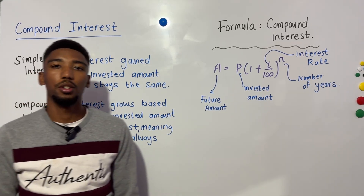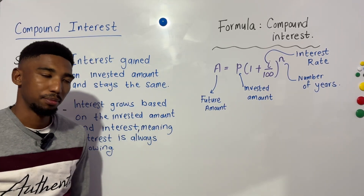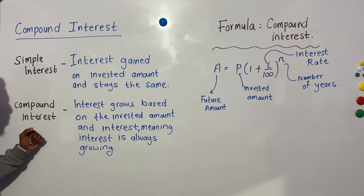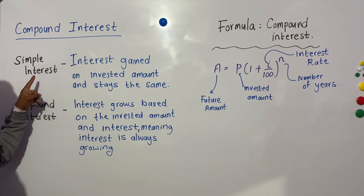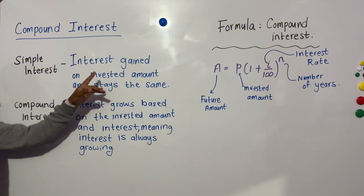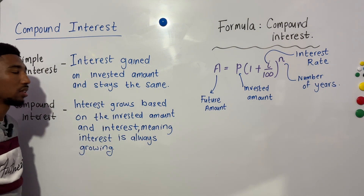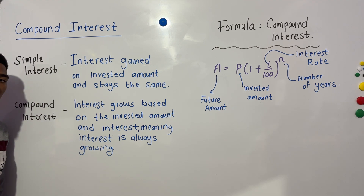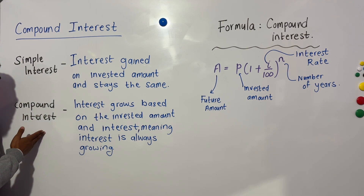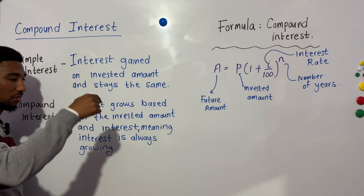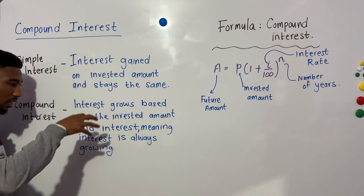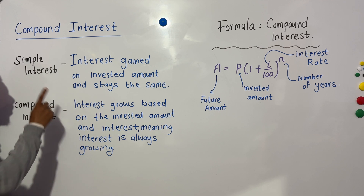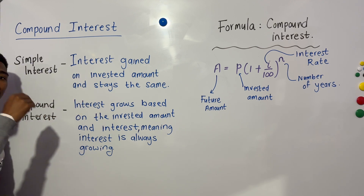Hello and welcome to a video on compound interest. The difference between simple interest and compound interest is that simple interest is the interest gained on the invested amount, meaning the simple interest will always stay the same. However, compound interest will grow based on the invested amount and the interest, meaning that the interest is always growing.